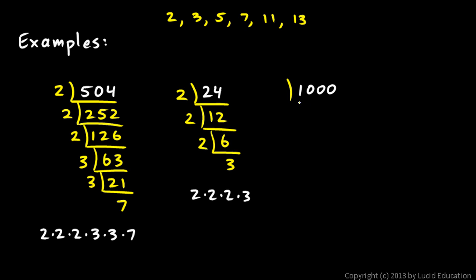Okay, 1,000. Find the prime factorization of 1,000. And don't be intimidated because this is a big number. These numbers get small really fast when you start dividing. See, 1,000 is even. You divide it by 2 and you get 500. And 500 is also divisible by 2. That gives you 250. 250 is divisible by 2. That gives you 125. See, the number's already getting a lot smaller.